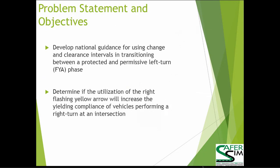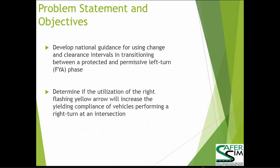The left turn project aims to develop guidance for using change and clearance intervals when transitioning between the protected and permissive left turn phase — specifically, when using the flashing yellow arrow with a permissive left turn phase, do we need the all-red clearance interval when transitioning to it, and what is the appropriate duration? The right turn project implements the flashing yellow arrow on the right turn and develops an understanding of potential yielding compliance from vehicles. We'll use a computer-based static evaluation and a field evaluation vehicle trajectory study to analyze these.